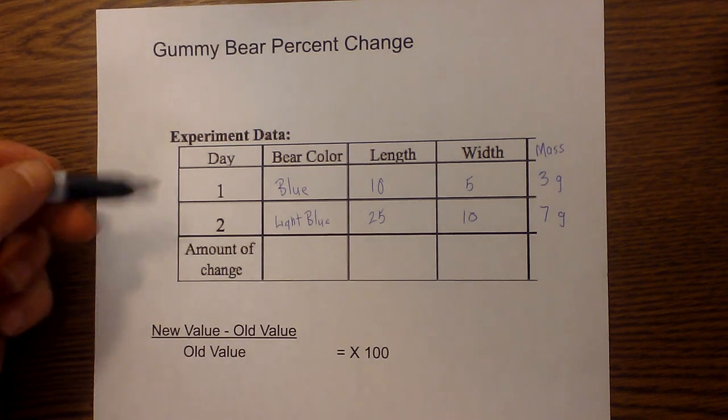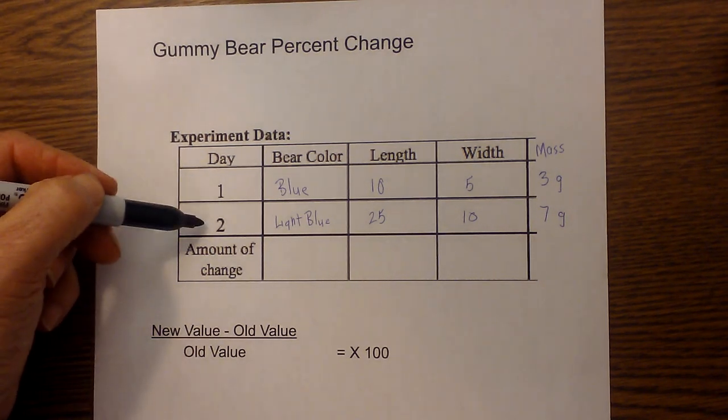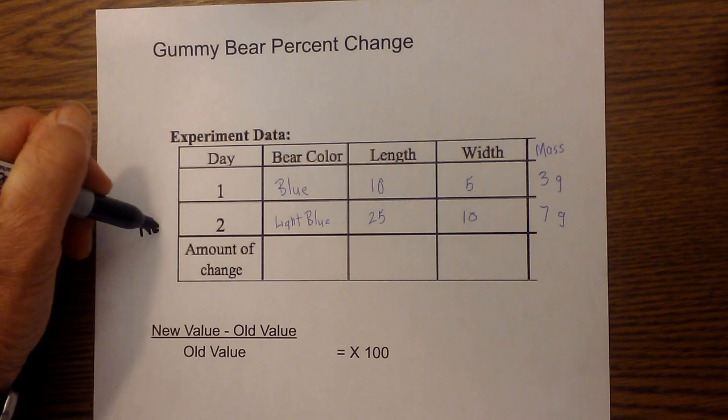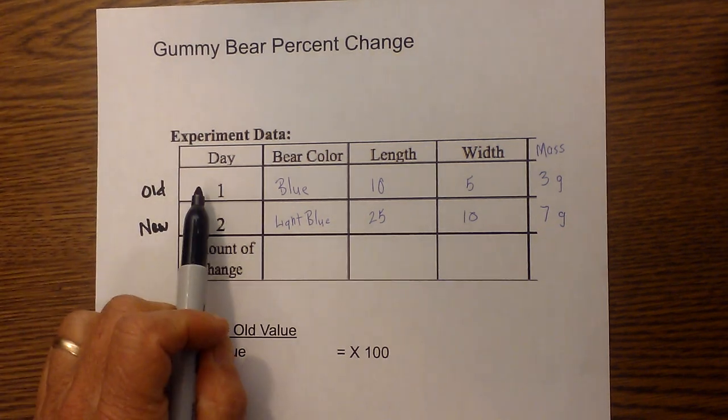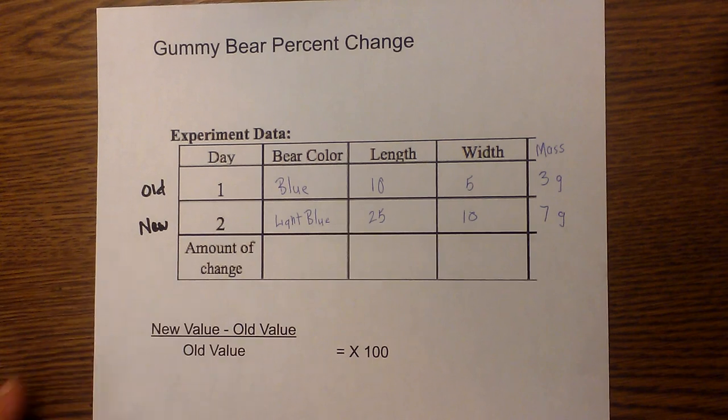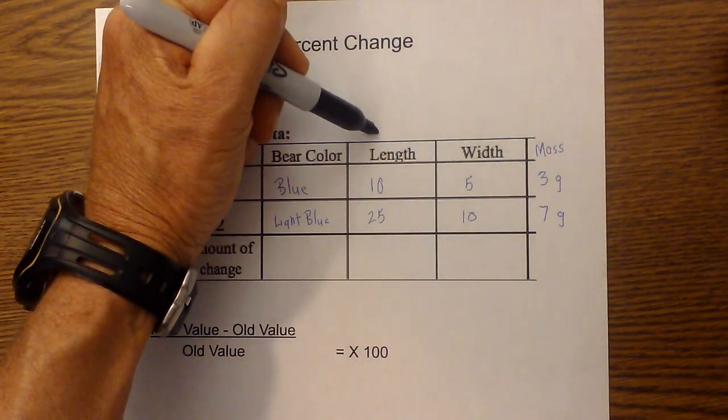Now let me label these. Day 2 is going to be the newest value and day 1 is going to be the old value. Because you start at day 1 and then day 2 you have a new value. So I will go ahead and plug the numbers in and let's first work length.